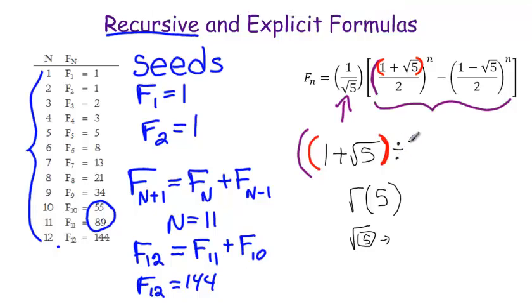Then you need to divide by 2 for the denominator, then close the parenthesis and you need to do the exponent of n. And let's just do 12. We'll find the 12th Fibonacci number. So to find the 12th Fibonacci number, n is going to be 12.